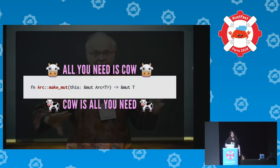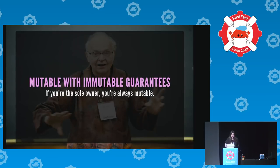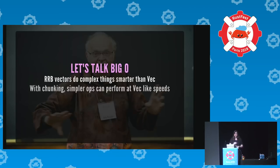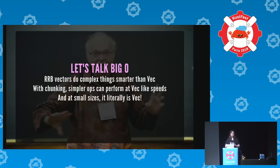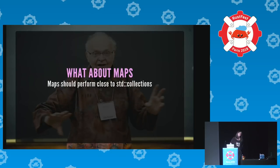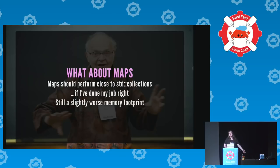So: we have mutable data structures with immutable guarantees, and they perform like it. RRB vectors do complex things more smartly than Vec, and with chunking we can get similar performance. At small sizes it literally kind of is just a Vec or two Vecs at worst. The memory footprint is only slightly worse than Vec. Likewise with maps, the implementation is pretty similar to the mutable version — it just has an added make_mut. Still with a slightly worse memory footprint, but that's the price to pay.